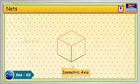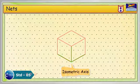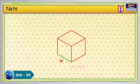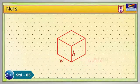Three lines of the isometric axes represent the three primary dimensions of the object, width, height, and depth.